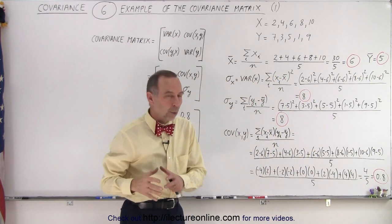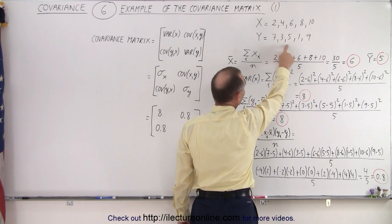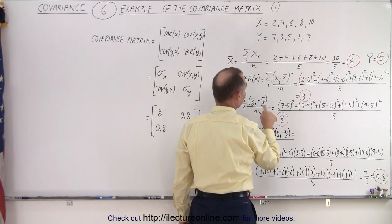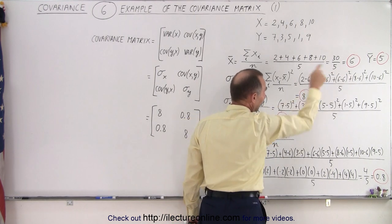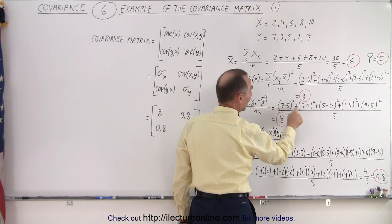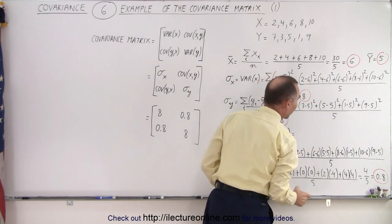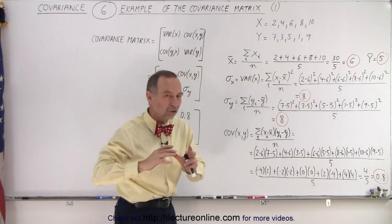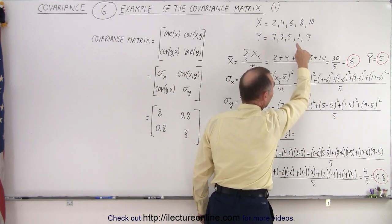We do the same for the Y data set. Again, we take each of the numbers 7, 3, 5, 1, and 9, and subtract from that the average value for Y, which we found to be 5. So 7 minus 5, 3 minus 5, 5 minus 5, 1 minus 5, 9 minus 5, and we take each of those differences, we square them, and then we divide that sum by the total number of numbers in the data set.